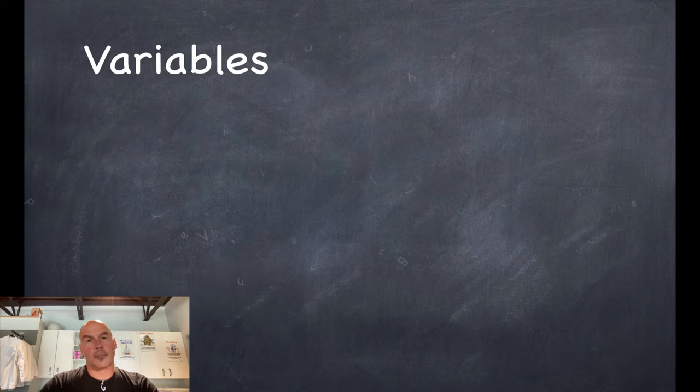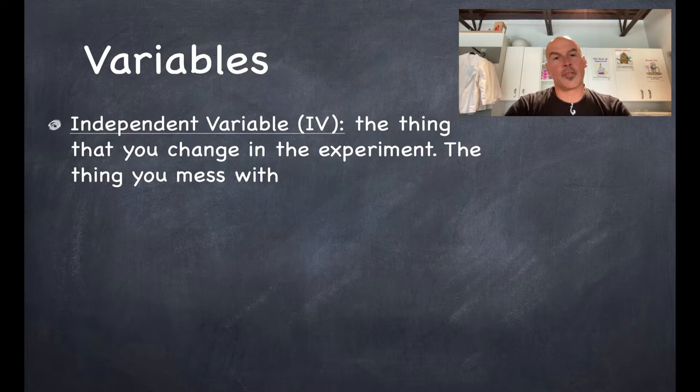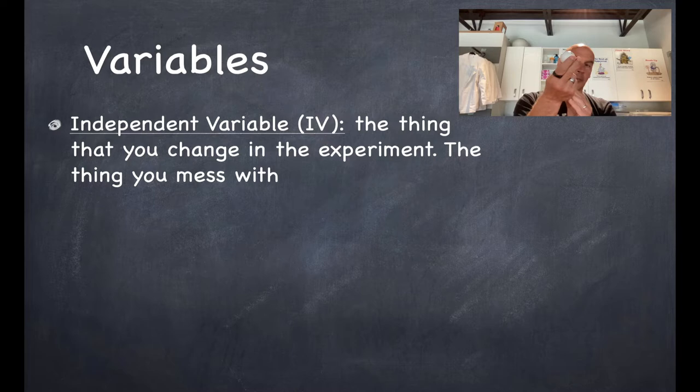Now, variables. Let's get into this a little bit more. So you've got the independent variable, otherwise known as the IV abbreviation. The thing that you change in the experiment, this is the thing that you mess with. So in this case, it would be the density of the golf ball versus the density of the ping-pong ball.